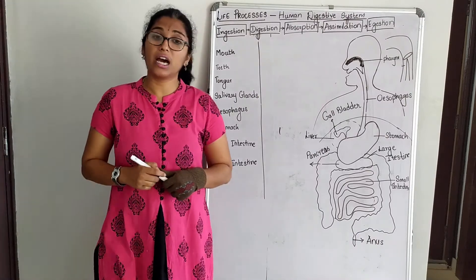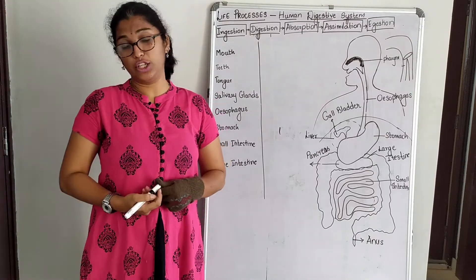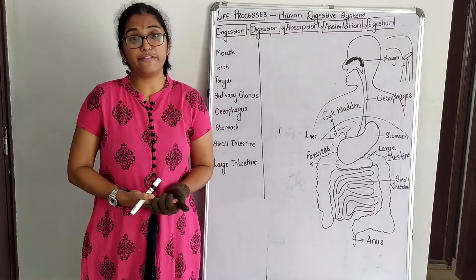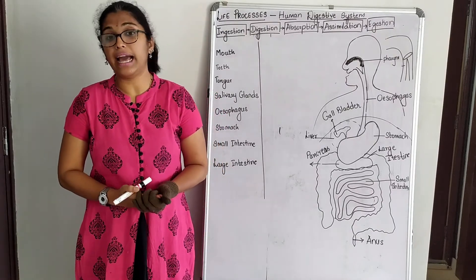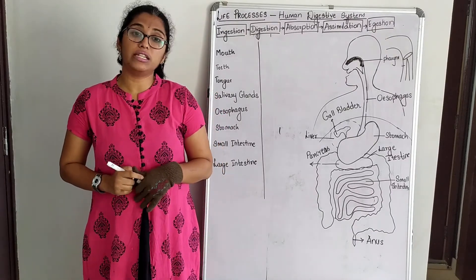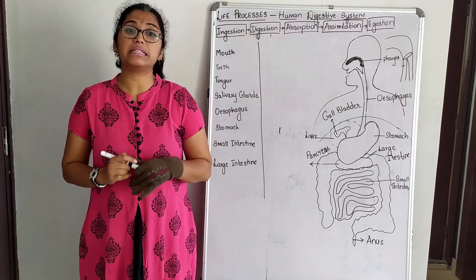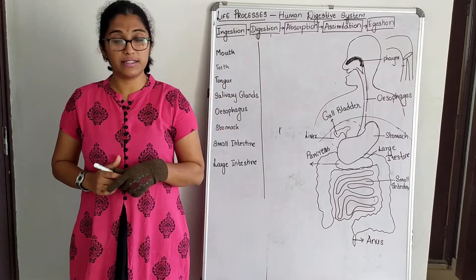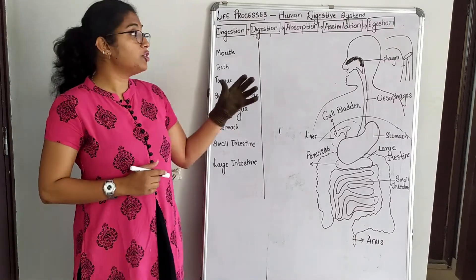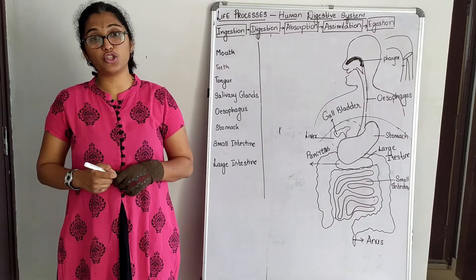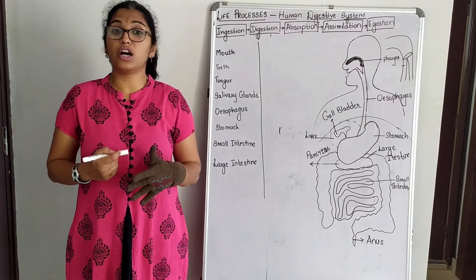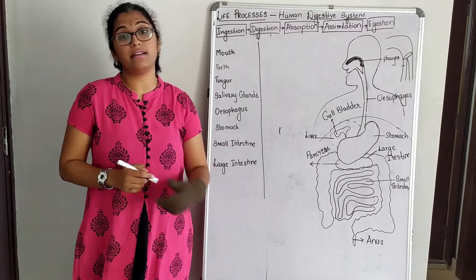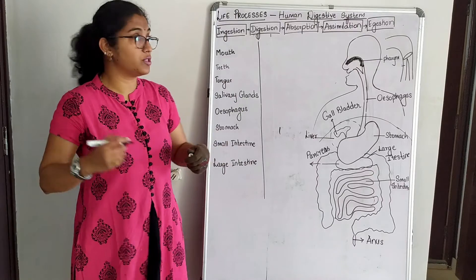Human beings are omnivorous in nature; that is, we intake both plant food and animal food. Nutrition in human beings is carried out by the human digestive system. The human digestive system consists of certain organs and glands which help us in the digestion process.